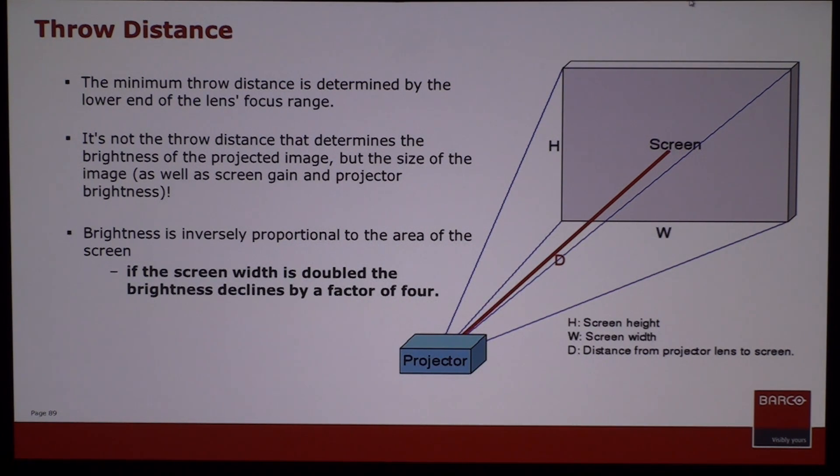Brightness is inversely proportional to the area of the screen. If the screen width is doubled, the brightness declines by a factor of four because, for instance, not only did that screen get twice as wide, but it got twice as high. So that's four times the surface area, essentially four times less light.